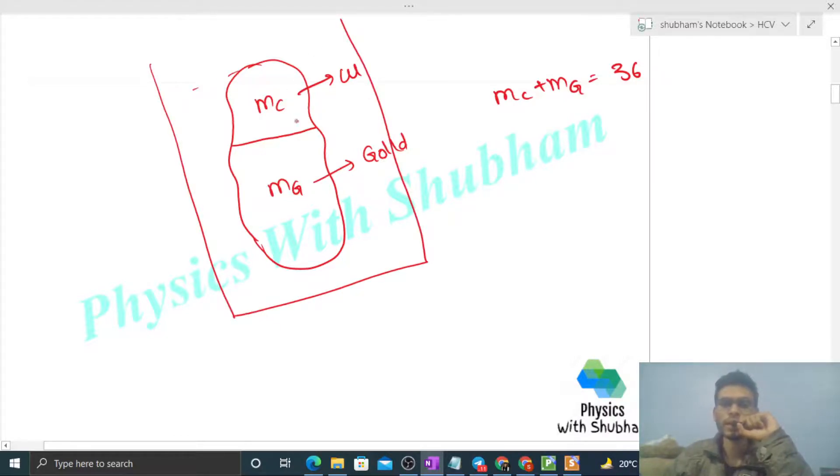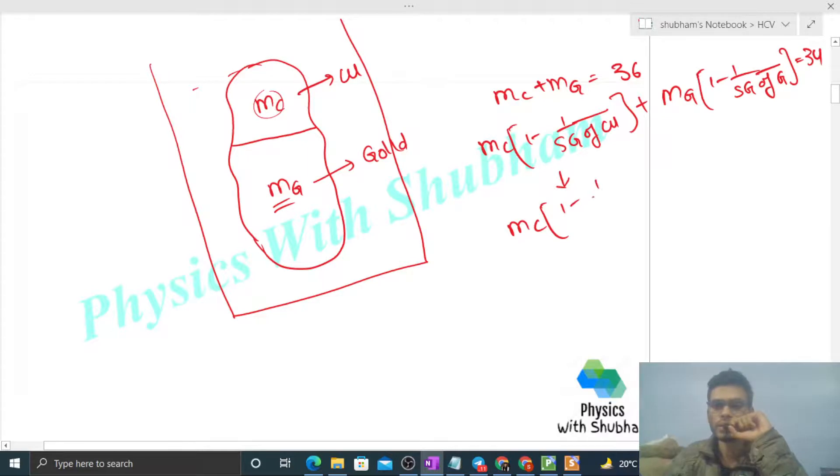When we immerse it completely in water, the apparent mass given is 34. Apparent mass of copper will be mc times 1 minus 1 upon specific gravity of copper, plus mg times 1 minus 1 upon specific gravity of gold, that is 19.3. This equals 34.